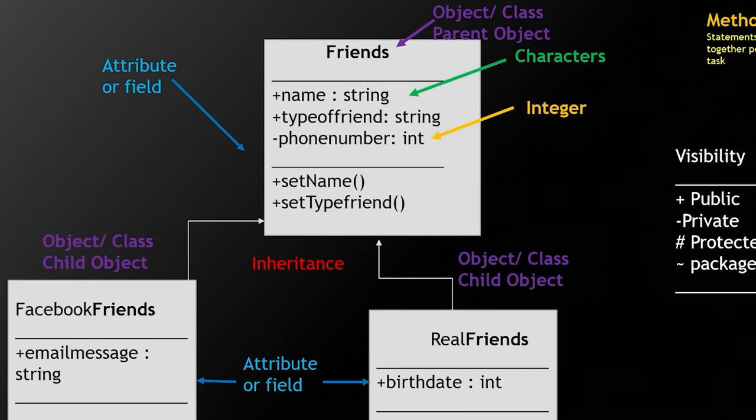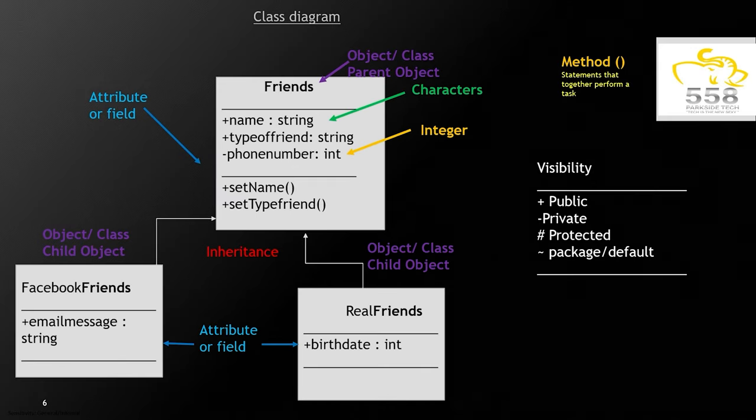And you can see how it's laid out here that in your real friends, you have a public birth date. Why? Because that plus sign symbols that it's public. The Facebook friend object, child object, has a plus email message. And they're going to be inheriting everything from their friends. This is how it's depicted in a UML diagram.